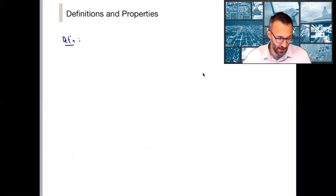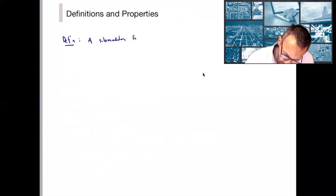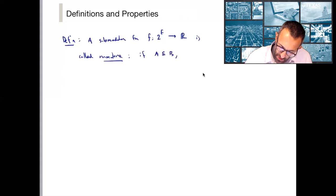A submodular function f is called monotone if whenever A is a subset of B, f of A is less than or equal to f of B.